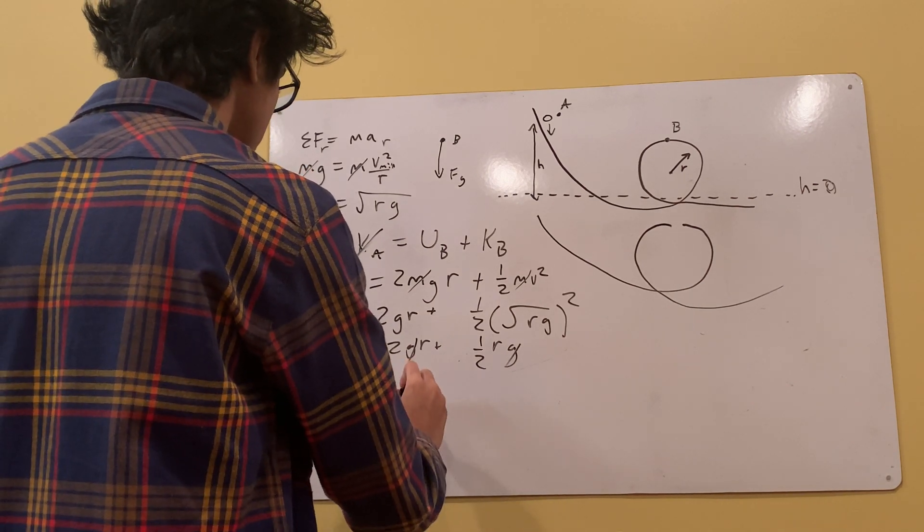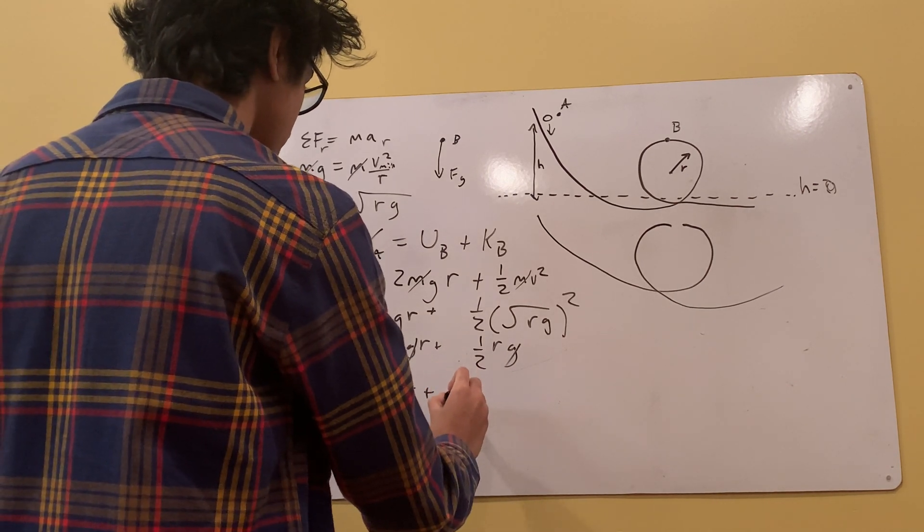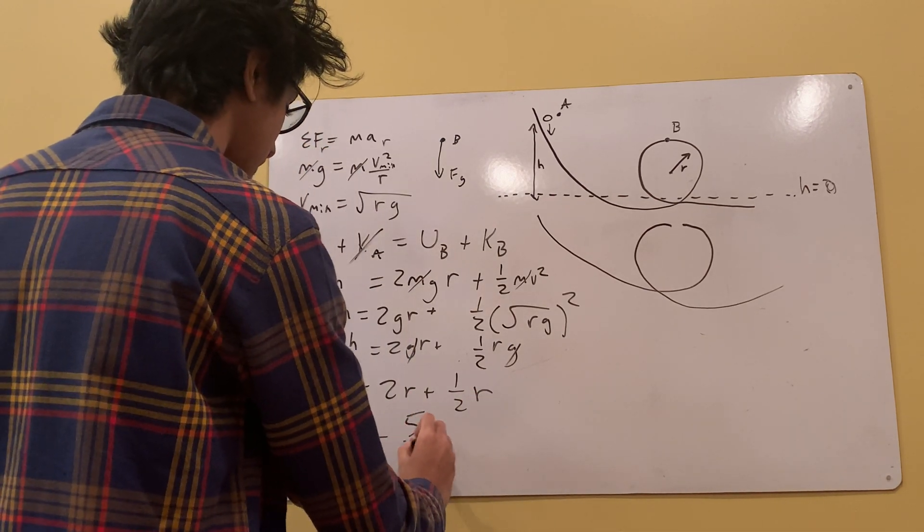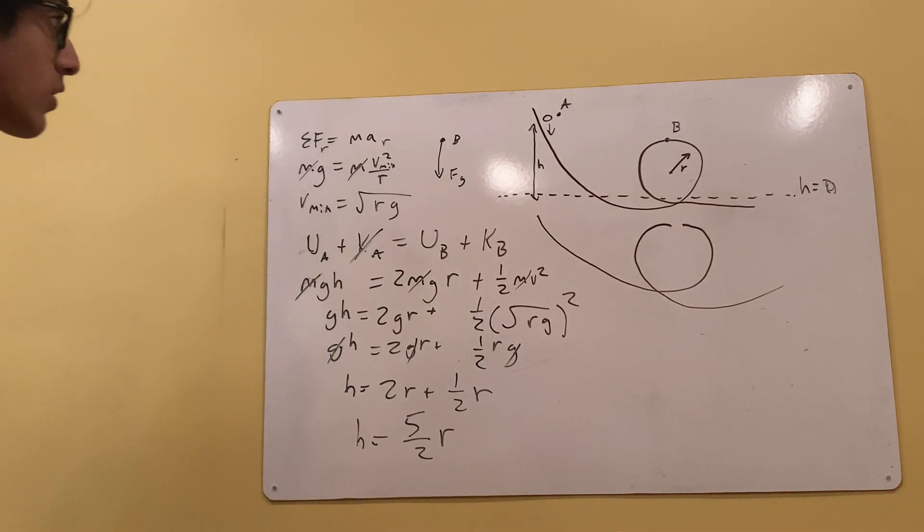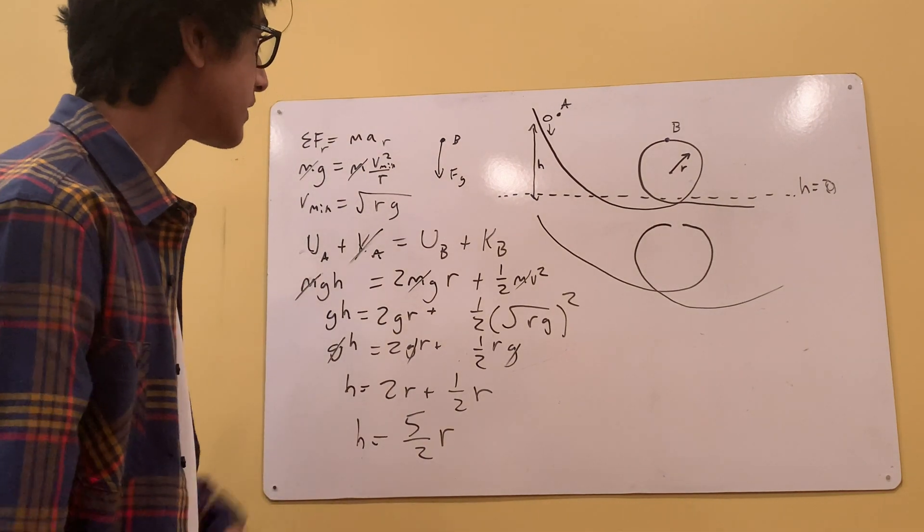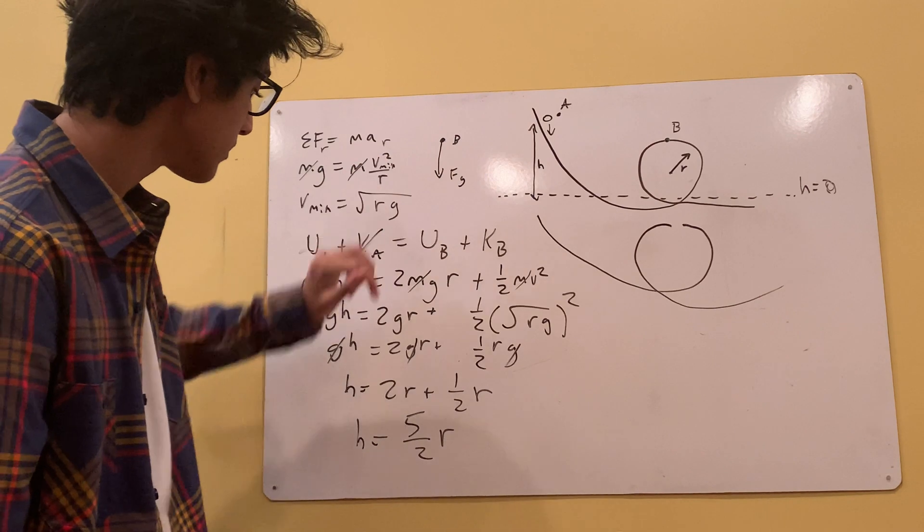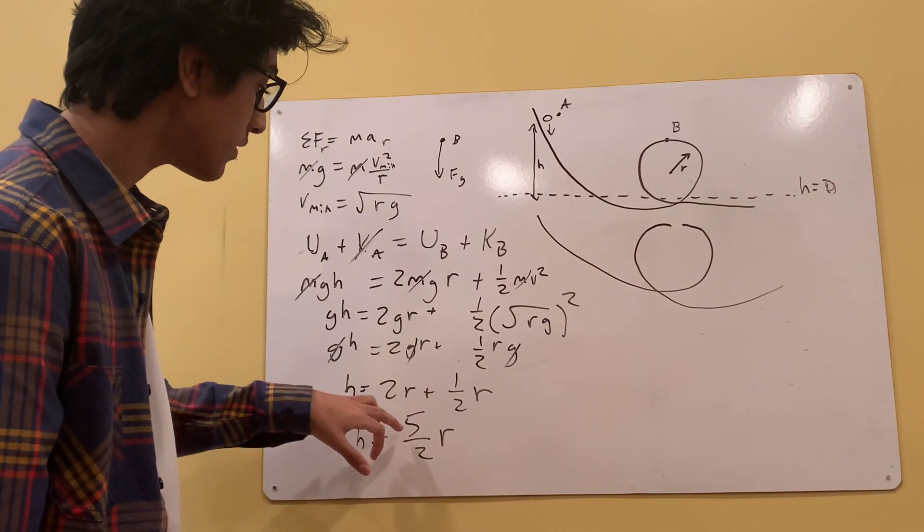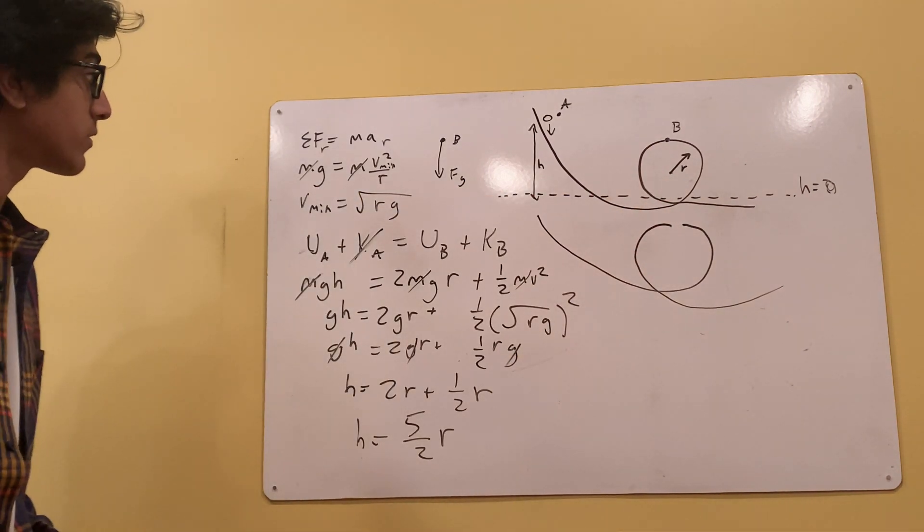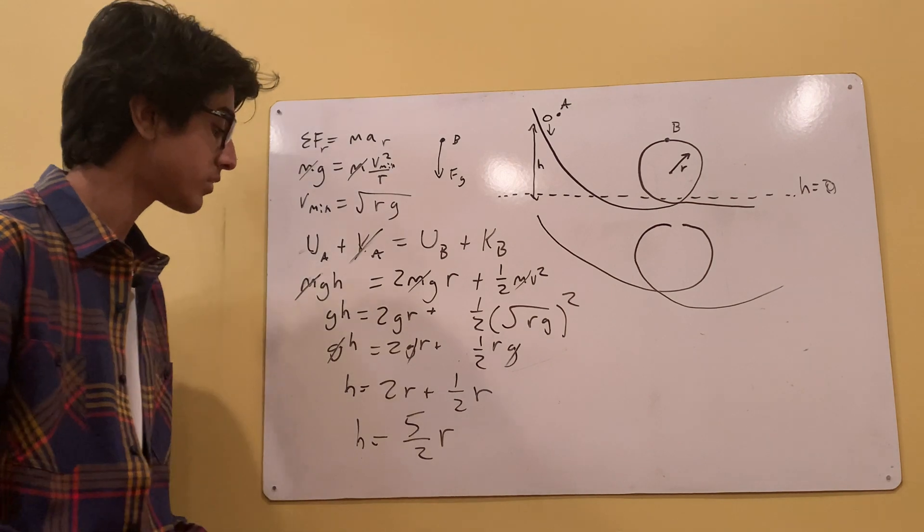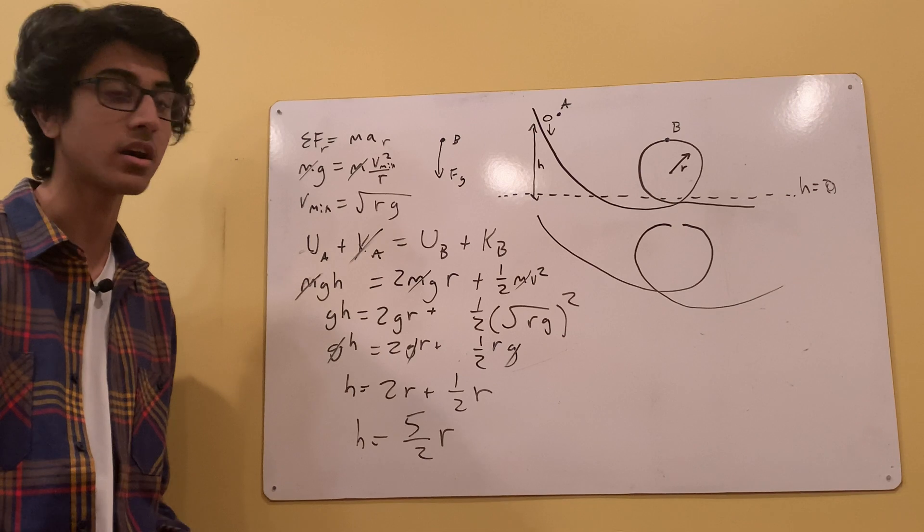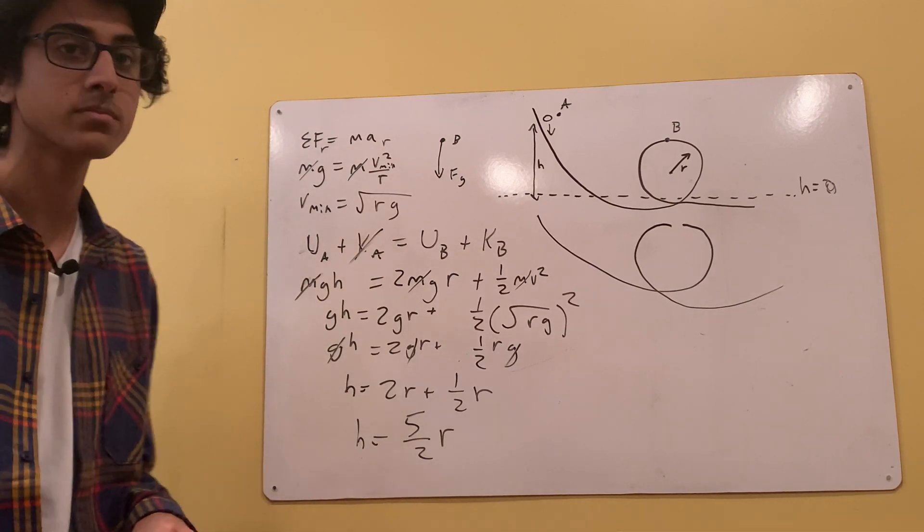And this is true for all loopy loops that don't experience friction. The height that it needs to be released from in a ramp needs to be 5 over 2R, compared to the radius. So yeah, I think this is a really interesting problem to go through. It really helps to work through your understanding of the conservation of mechanical energy.